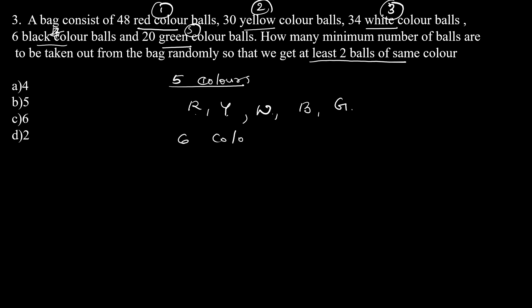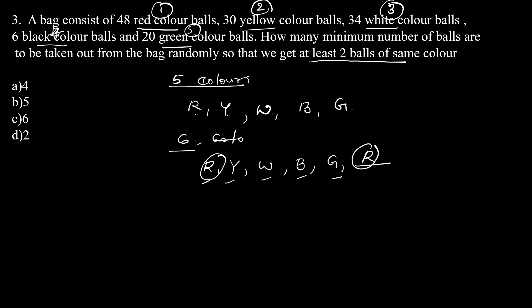But if we take 6 balls, the first five can each be a different color. For the 6th ball, there is no other color left, so it must repeat one of the existing colors. That means at least 2 balls of the same color are guaranteed. So the minimum number of balls to be taken out is 6, and option C, 6, is the correct answer.